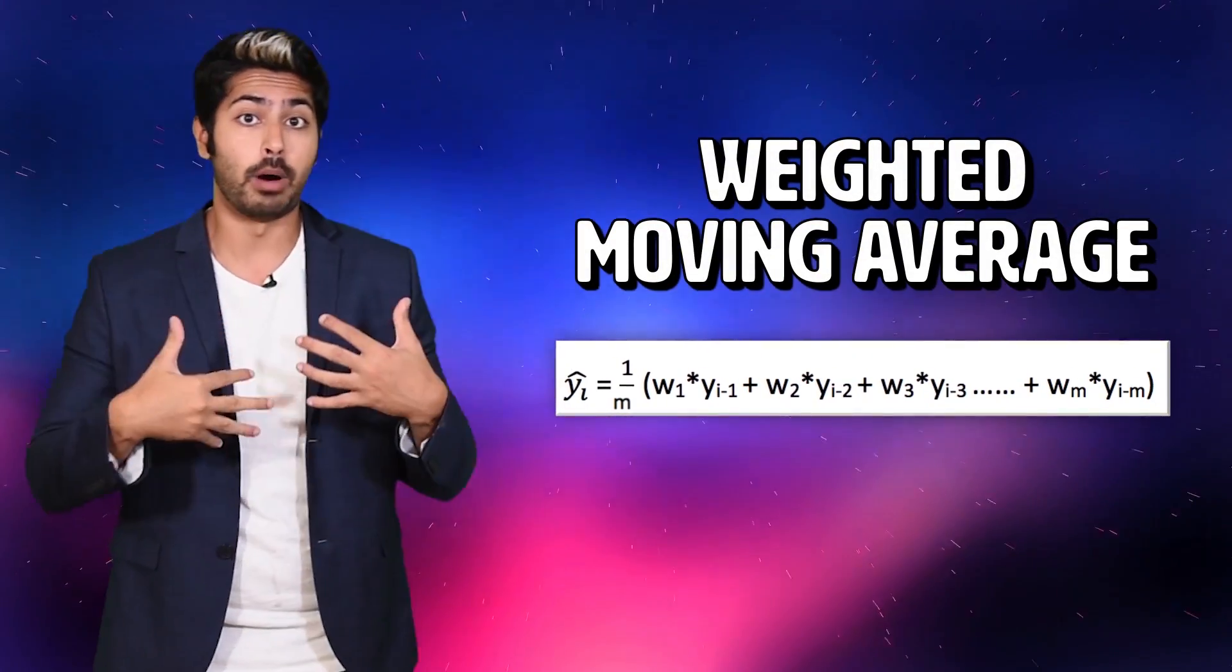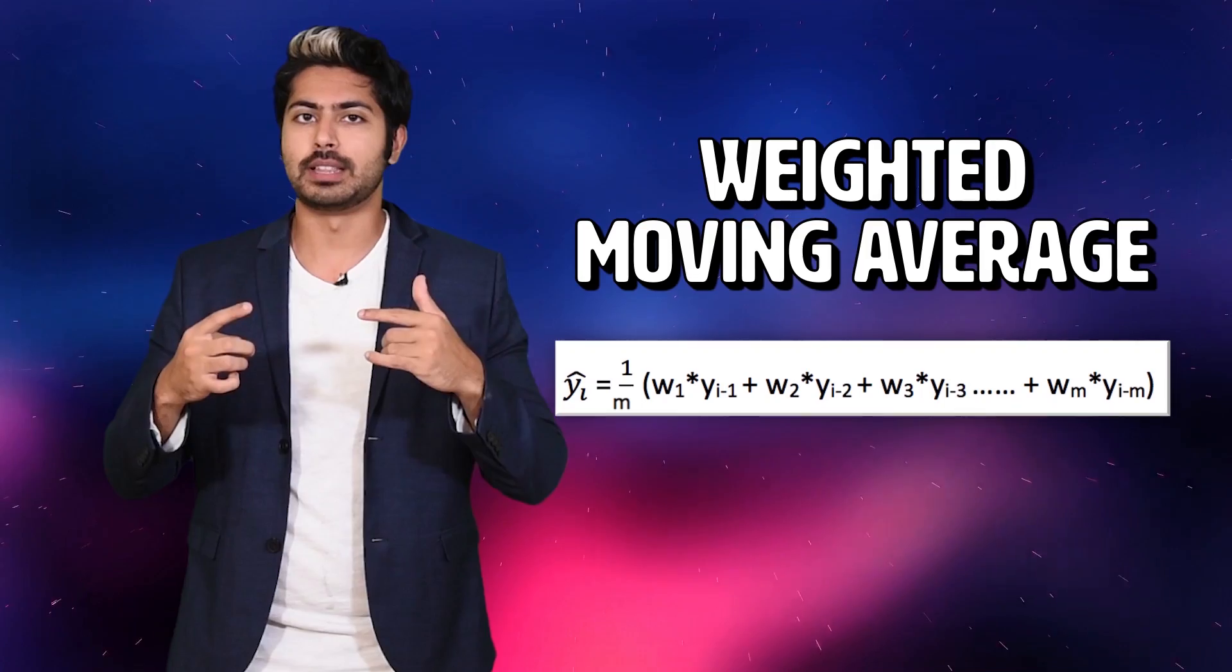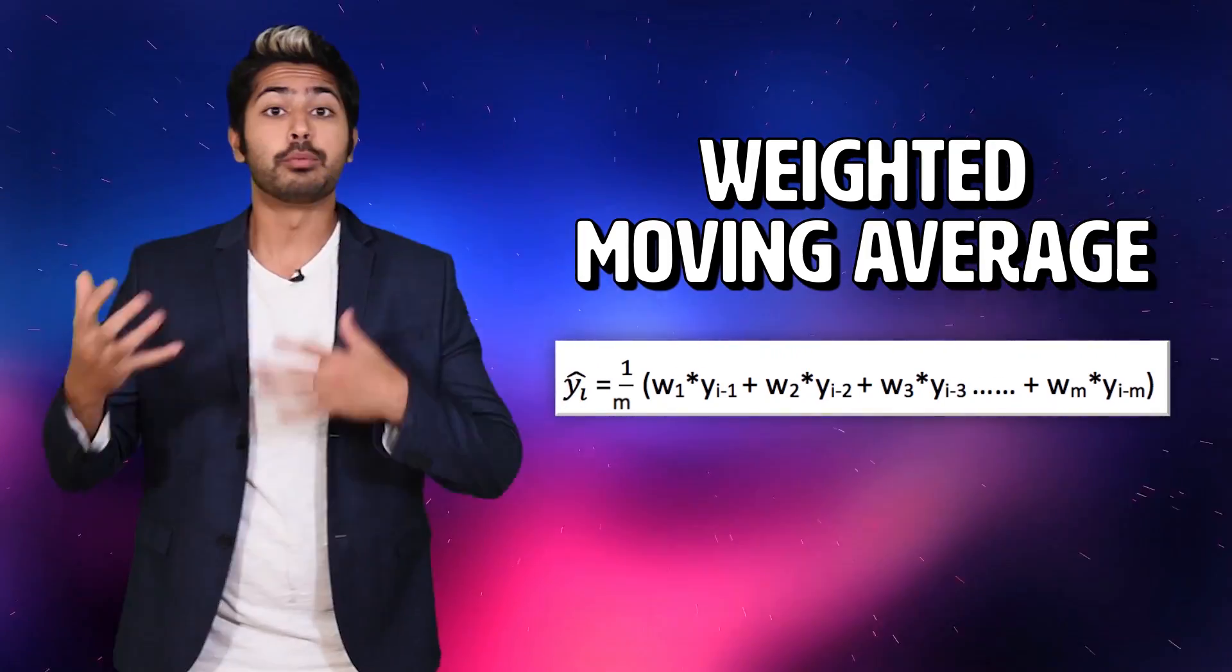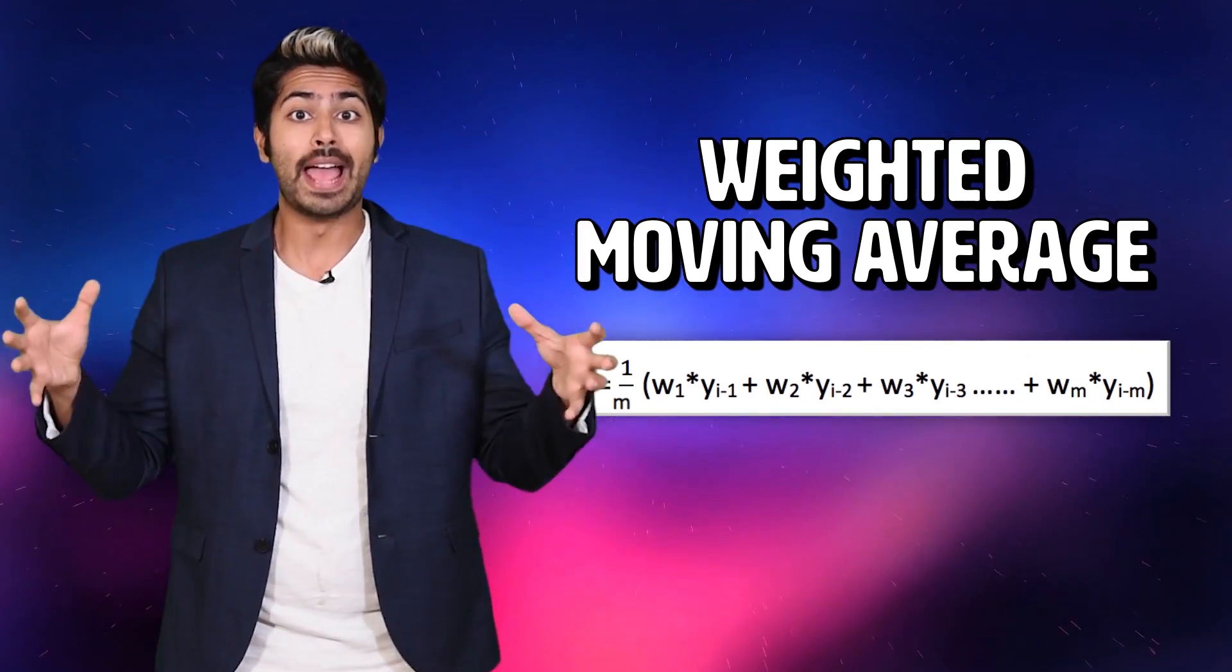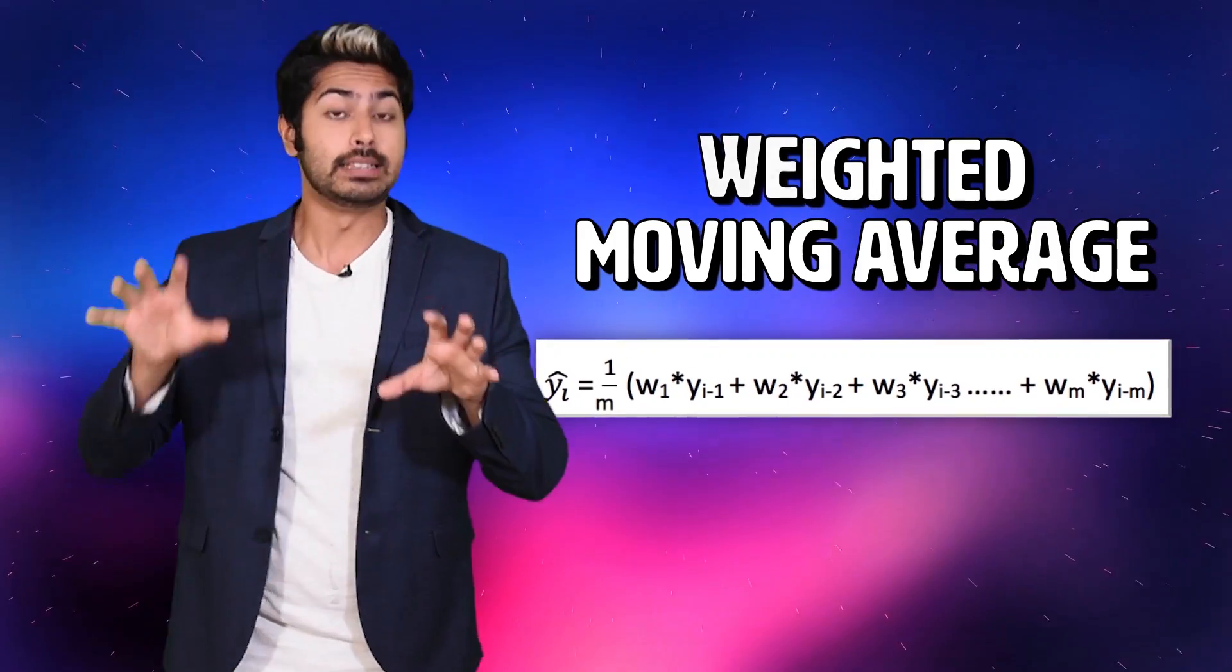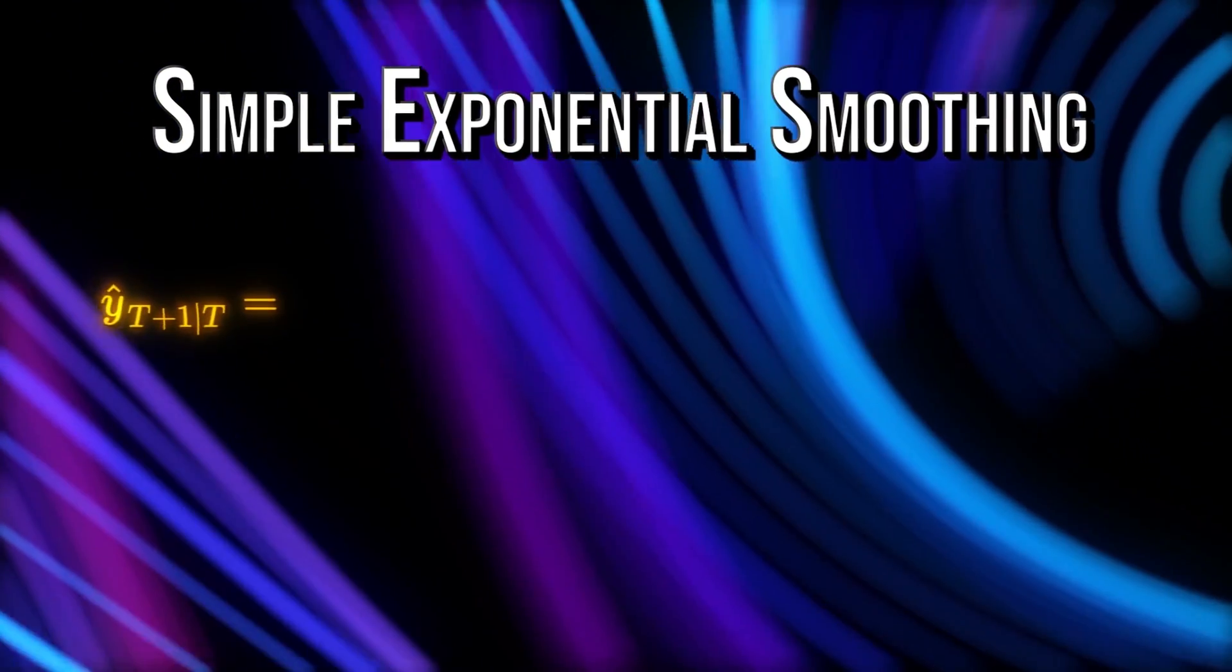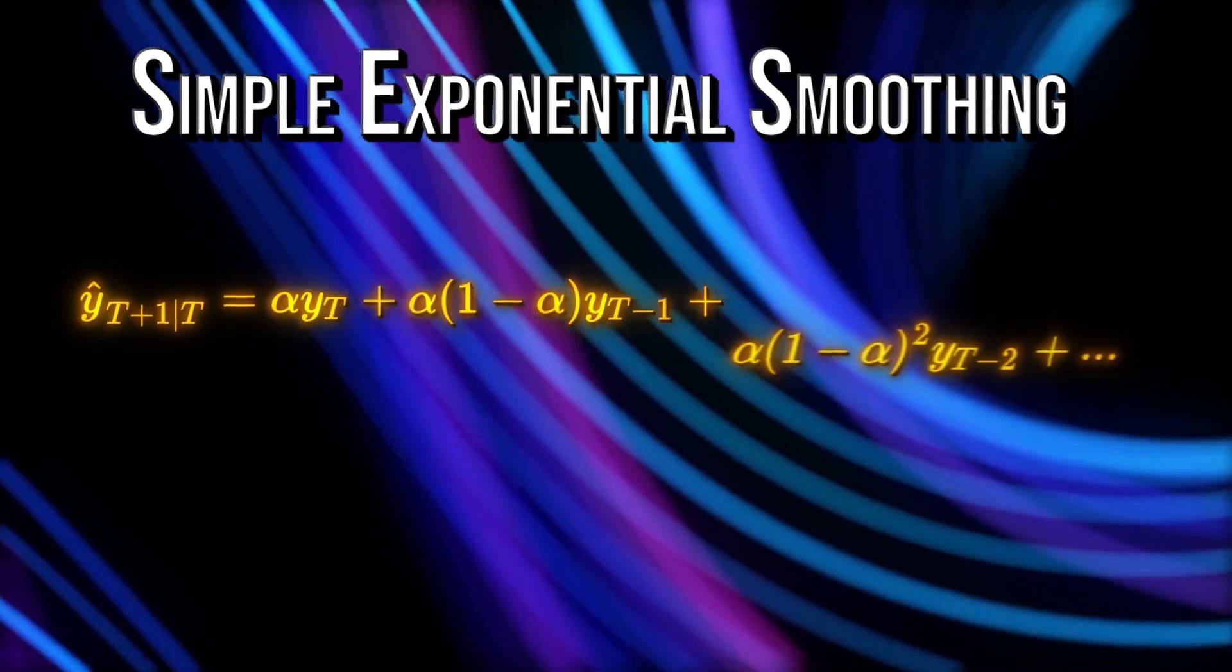One thing we could possibly do to improve our model is add some weights to our values, meaning it seems like the more recent the data points, the more it matters. If we gave different weights within the sliding window values which all add up to one, we can mathematically define a preference for values that came later on in the series. Notice that both the simple average and the weighted moving average are on opposite ends of the spectrum in terms of how they approach the problem.